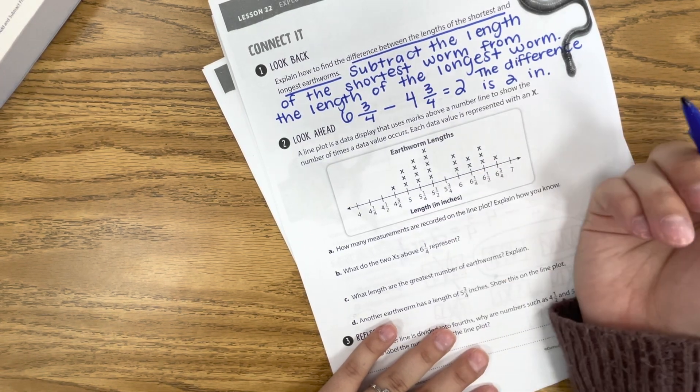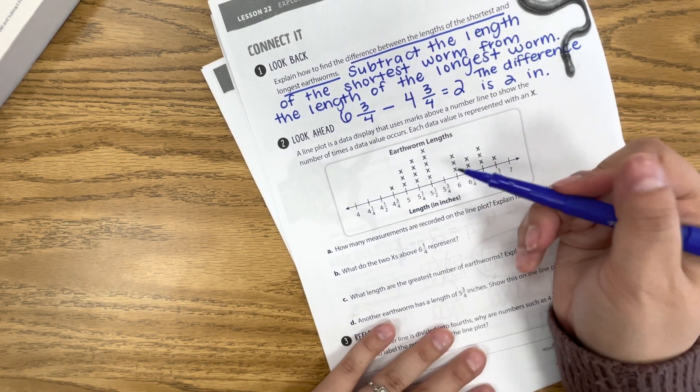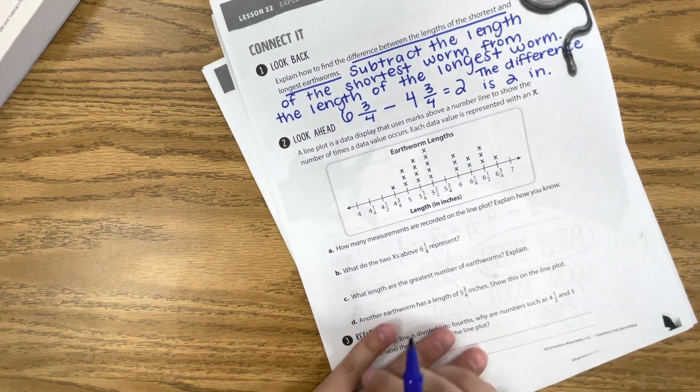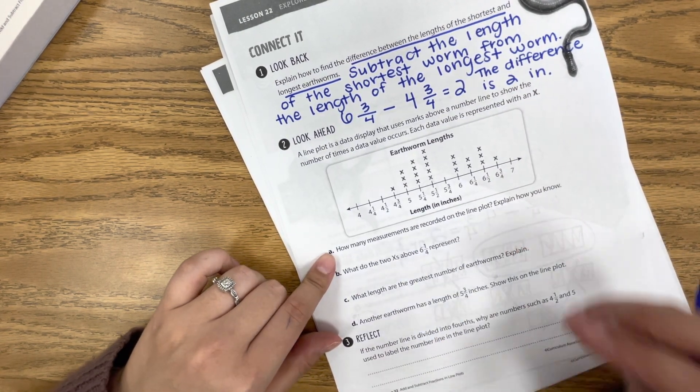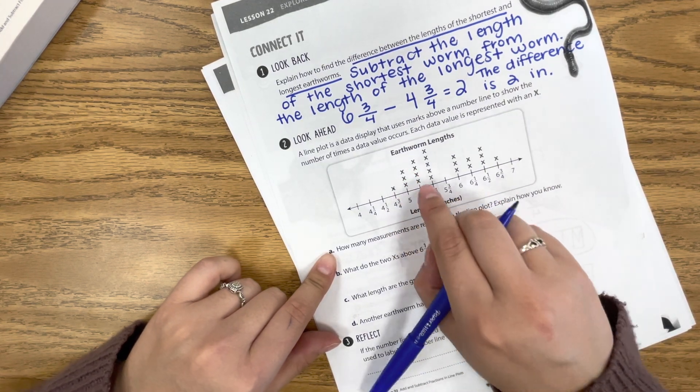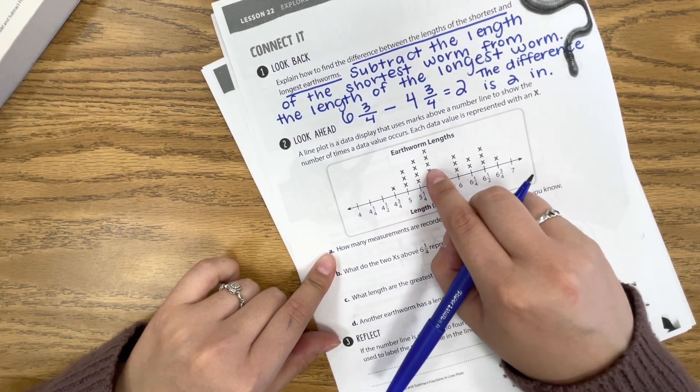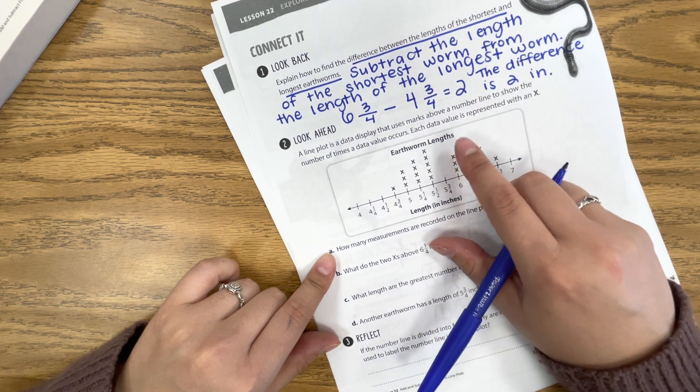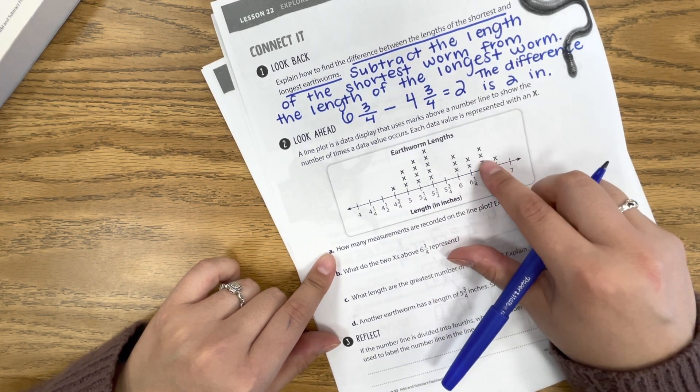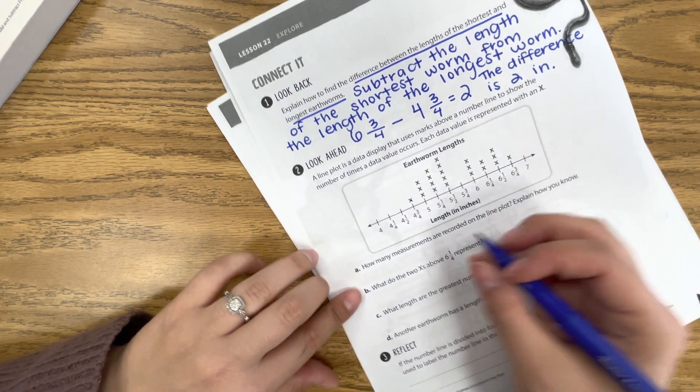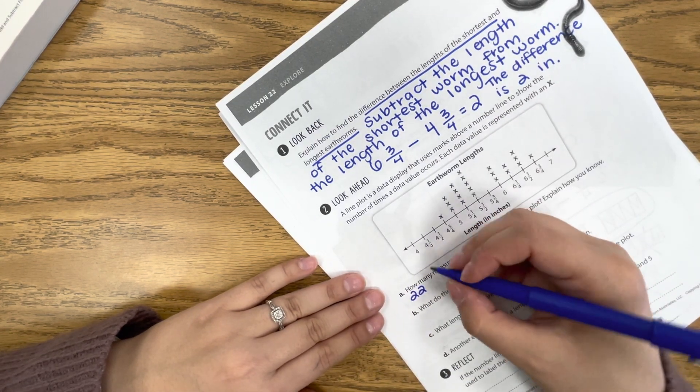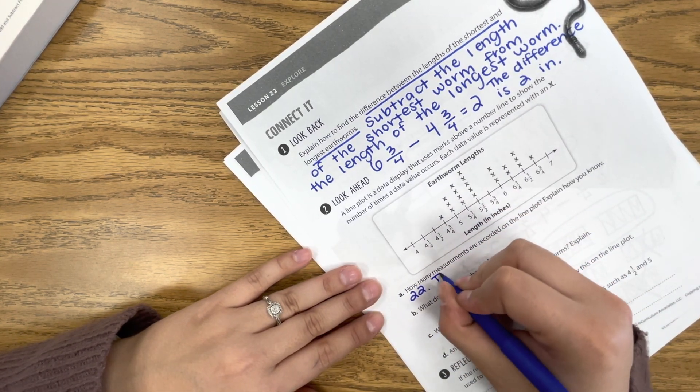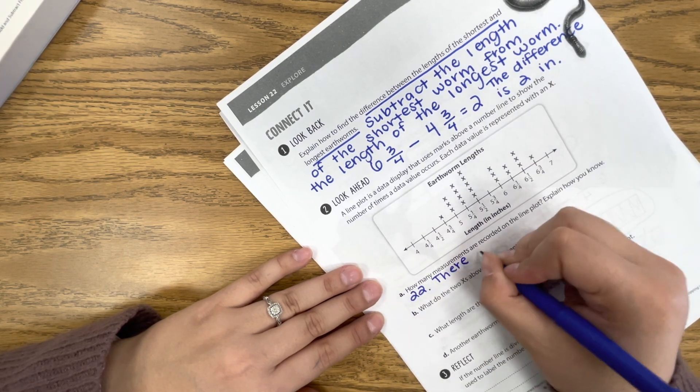So this is one worm, and then three worms were 5 inches, and so forth. So if we want to see how many measurements are recorded in the line plot, we just count how many X's we have. So we have 1, 2, 3, 4, 5, 6, 7, 8, 9, 10, 11, 12, 13, 14, 15, 16, 17, 18, 19, 20, 21, 22. So we have 22 recorded, and we know that because there are 22 X's on our line plot.